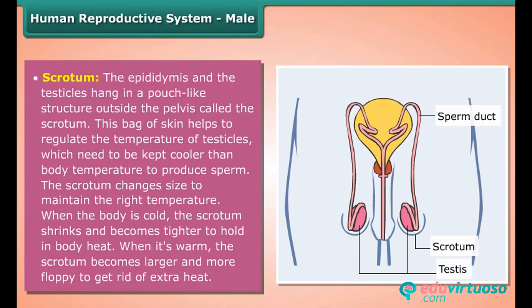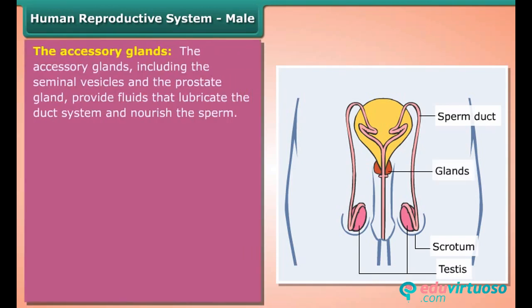The scrotum changes size to maintain the right temperature. When the body is cold, the scrotum shrinks and becomes tighter to hold in body heat. When it is warm, the scrotum becomes larger and more floppy to get rid of extra heat. The accessory glands, including the seminal vesicles and the prostate gland, provide fluids that lubricate the duct system and nourish the sperm.